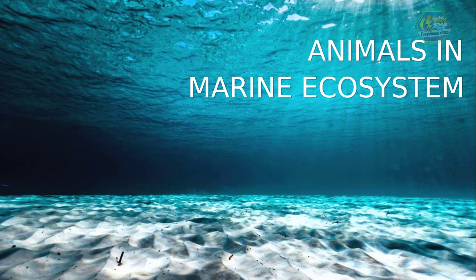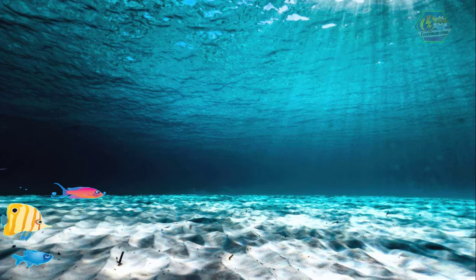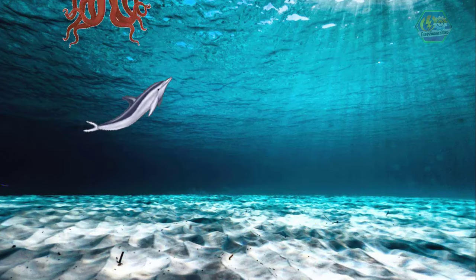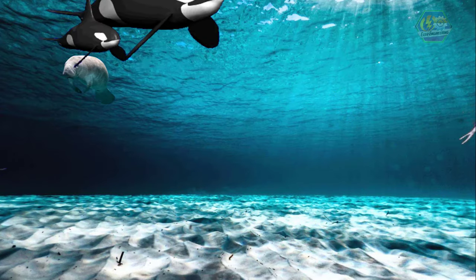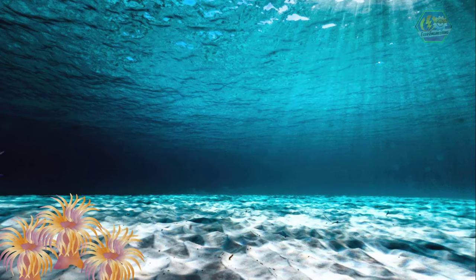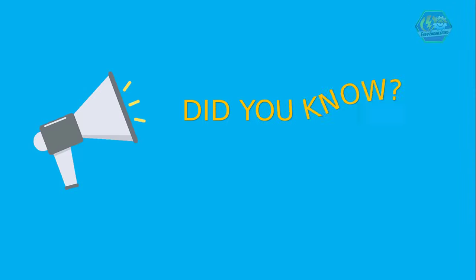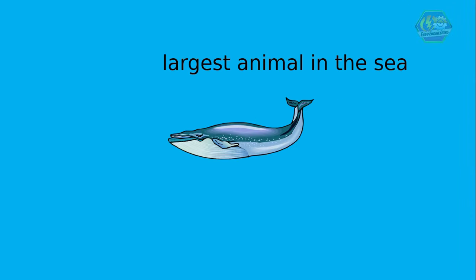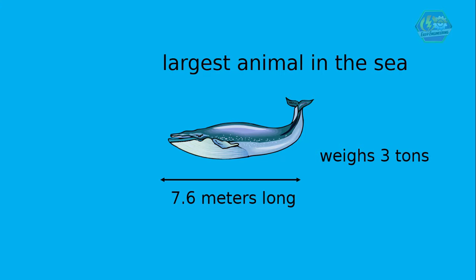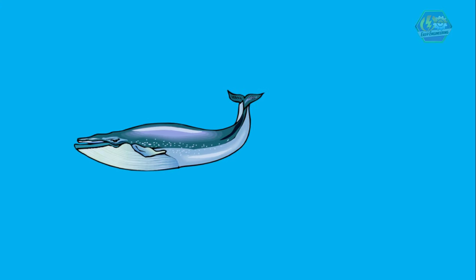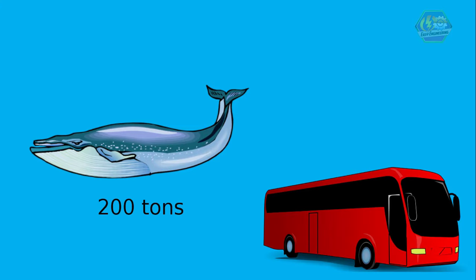There are lots and lots of them that we couldn't even count since the ocean is vastly wide. The ocean consists of a large variety of animal life, including fish, mollusks, dolphins, seals, walruses, whales, crustaceans, bacteria, sea animals, and many others. Fun fact — did you know that the largest animal in the sea is the blue whale? It averages up to 7.6 meters long at birth and weighs about 3 tons. As an adult, it can stretch to the length of a city bus and weigh close to 200 tons.